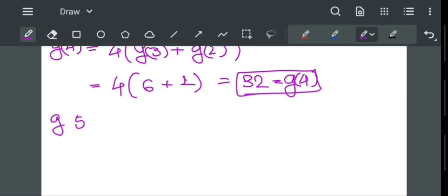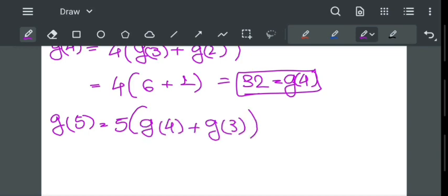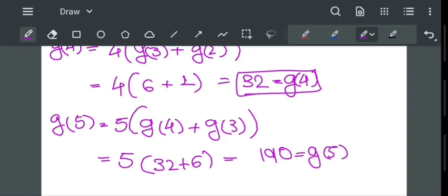Next, g of 5, last one, is equal to 5 multiplied by g of 5 minus 1 is g of 4, plus g of 5 minus 2 is g of 3, which is equal to 5 times 32 plus 6, which is equal to 5 multiplied by 38 equal to 190.